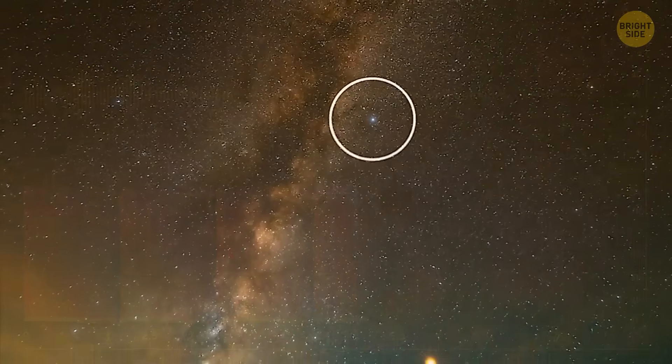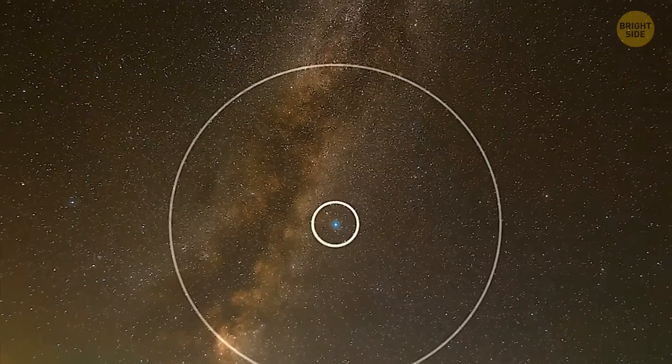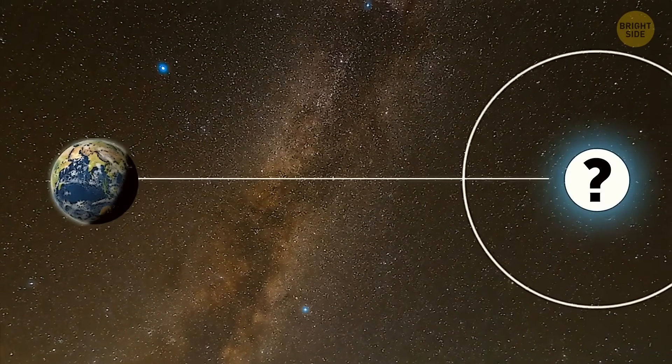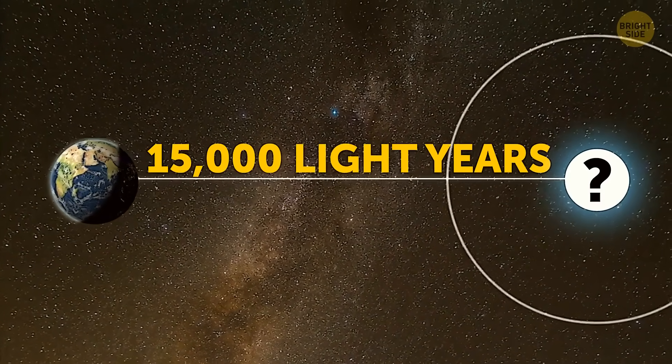This was great news for space explorers, because it meant they could now calculate how far away this mysterious object was. After doing the math, they figured out it was incredibly far, even on the space scale, 15,000 light-years from Earth. Now, the only thing left to uncover was what exactly this object was.